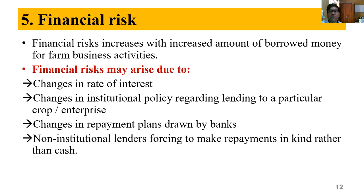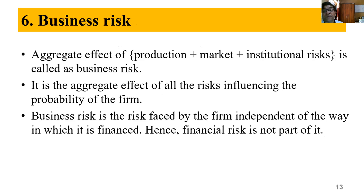Non-institutional lenders like money lenders or relatives may insist on repayment in kind instead of cash — for example, in cotton, making the farmer repay as part of the produce at 80 rupees per kg. The farmer may have to accept in some cases because of their relationship or because he may need them again next year. All these are financial risks. Business risk is the aggregate effect of production, market, and institutional risk.